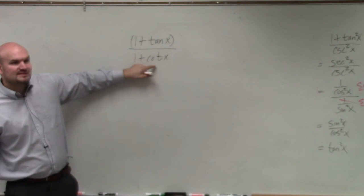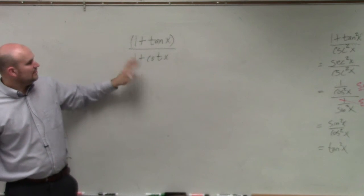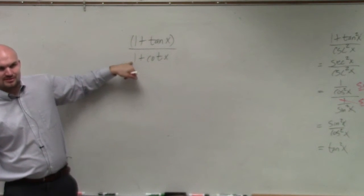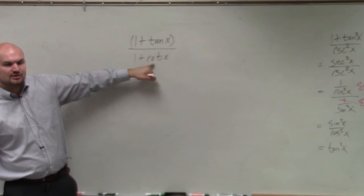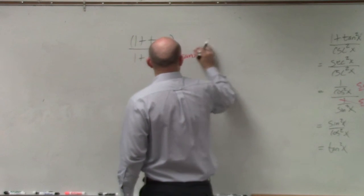So another thing we can do is, we should try to get rid of the denominator. We get rid of the denominator by multiplying by the reciprocal. So let's not focus on the reciprocal of 1, because that's just 1. What's the reciprocal of cotangent? Tangent. So let's multiply the top and the bottom by tangent of x.